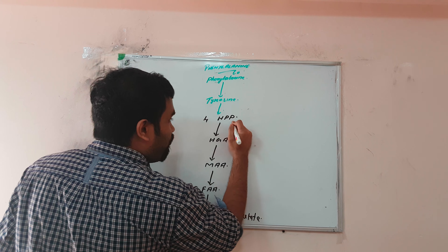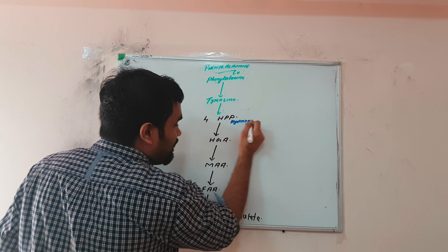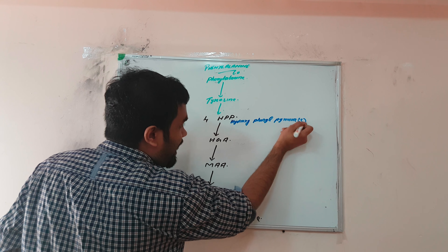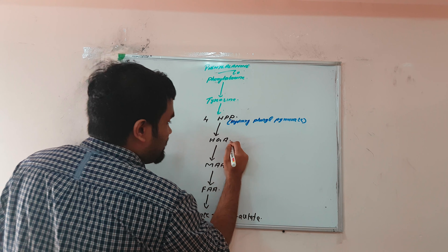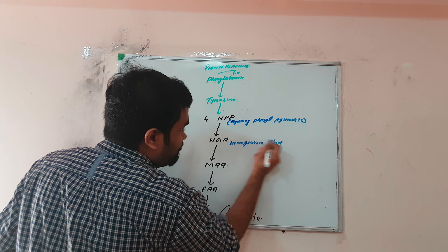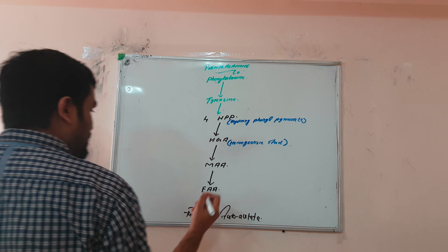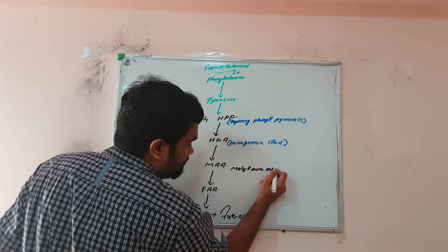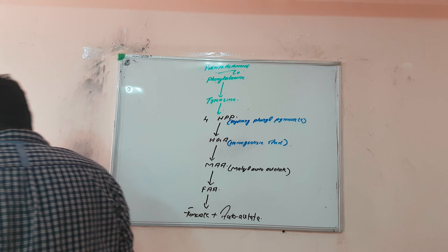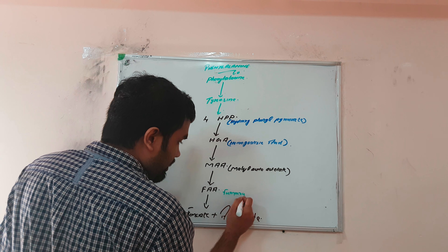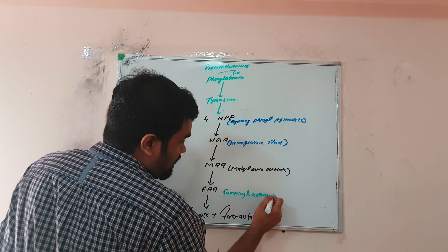Now let's expand all the abbreviations. 4HPP is 4-hydroxy phenyl pyruvate. HGA is homogentisic acid. MAA is maleylacetoacetate. FAA is fumarylacetoacetate. And the final step gives fumarate plus acetoacetate.